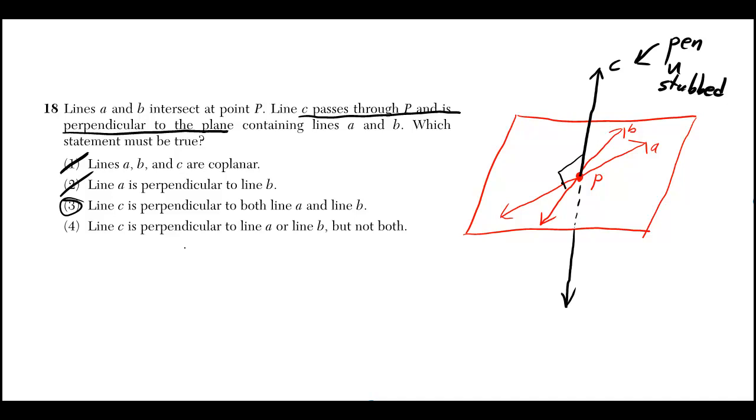And for completeness, line C is perpendicular to line A or line B, but not both. No, that's wrong. We just said it's perpendicular to both. It's perpendicular to any line that's in the plane because it's perpendicular to the plane.